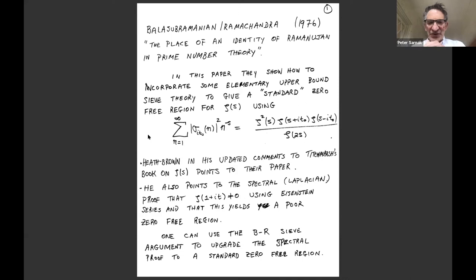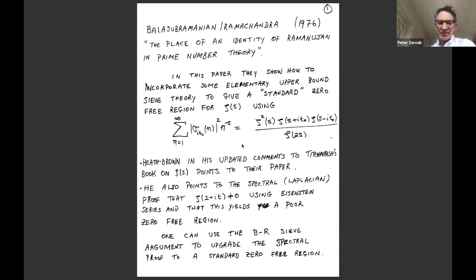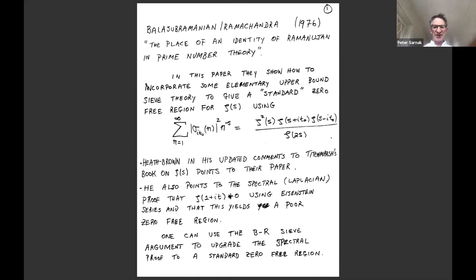It's that sieve bootstrap rather than Ramanujan's identity that I think has a fundamental place in the theory of numbers. There may not be many references to this paper in MathSciNet, but if you make it into Titchmarsh's book on the zeta function, then you've done something of substance. Heath-Brown in his updated comments to Titchmarsh's book on the zeta function points to their paper as a means to recover, without the usual trigonometric polynomials which produce more zeros than poles, a standard zero-free region. He points to their paper as a very novel and interesting idea. He also points to another proof of the non-vanishing of the zeta function on the line one using Eisenstein series — in fact, a spectral or differential equation proof, which in my view is the most important proof that exists, for the reasons I'm about to give.